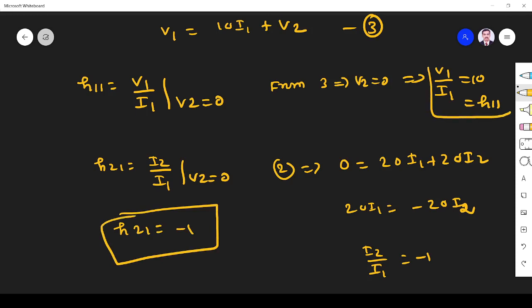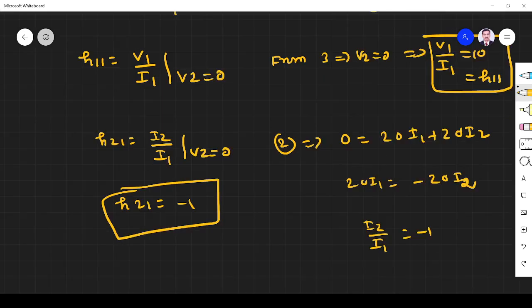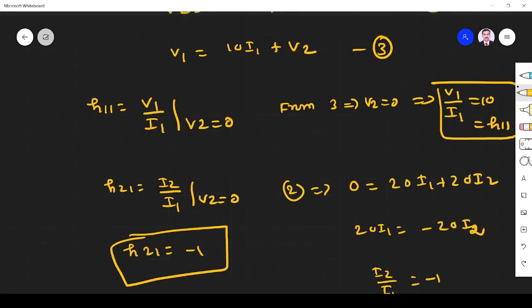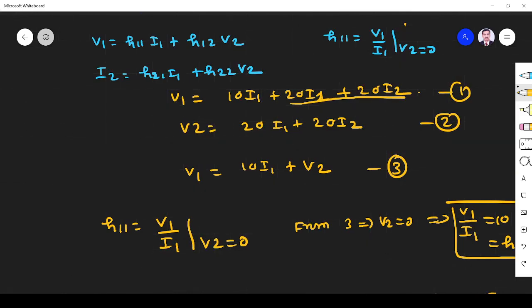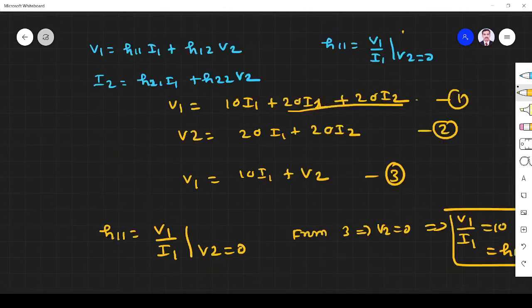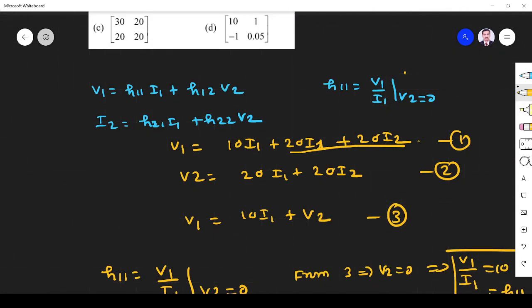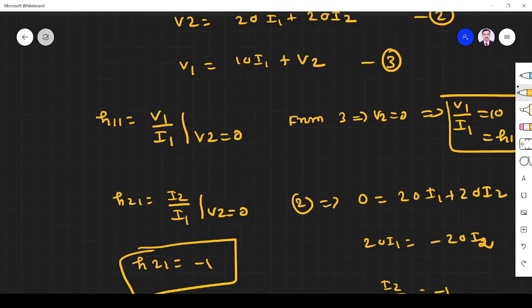So h11 is 10 and h21 is minus 1. Next I need h12. h12 means I have to make i1 equal to zero, then h12 equals v1 by v2.